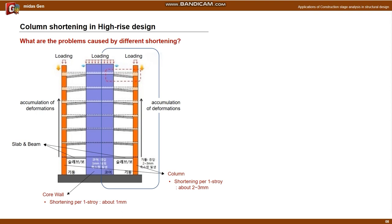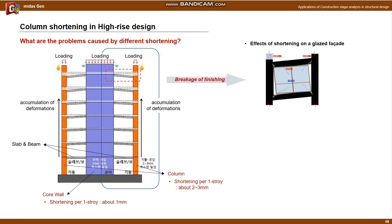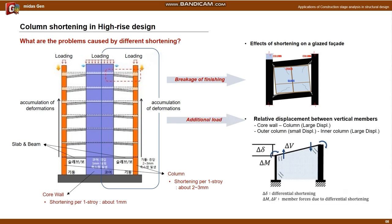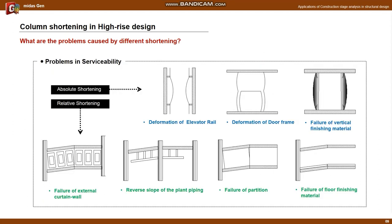What are the problems caused by differential shortening? First, it causes usability problems such as damage to finishing materials due to deformation. And the additional member force is added to the horizontal member due to deformation caused by differential shortening. This causes safety and serviceability issues like cracks. Absolute shortening causes problems such as bending of elevator rails, deformation of door frames, and damage to vertical finishing material. Relative shortening causes problems such as damage to external curtain walls, reverse slope of plant piping, and damage to partitions and floor finishing material.